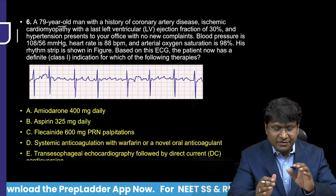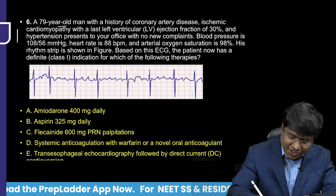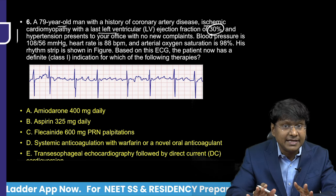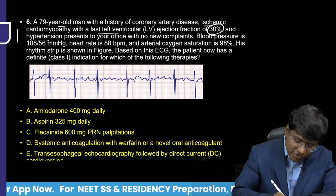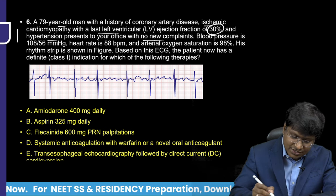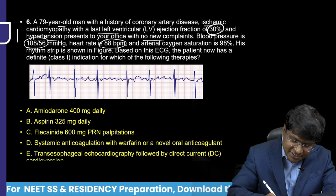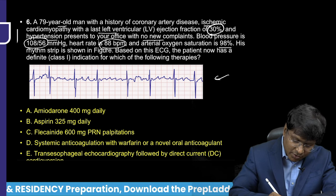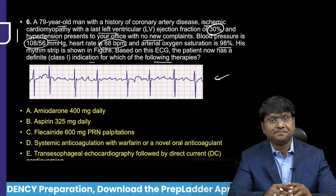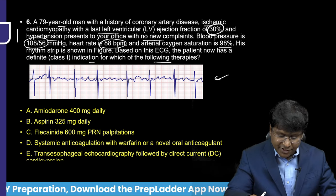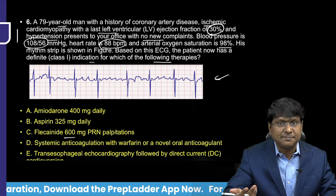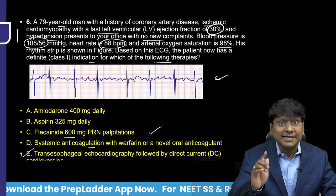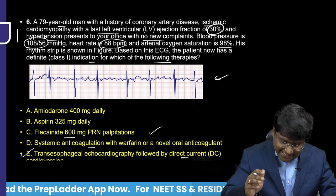Sixth question: A 79-year-old man with coronary artery disease, ischemic cardiomyopathy with left ventricular ejection fraction of 30%, and hypertension presents with no new complaints. Blood pressure is 108/56, heart rate 88 bpm, and oxygen saturation 98%. A rhythm strip is shown. Based on this ECG, what therapy does this patient now have a definite indication for? Options: amiodarone 400 mg daily; aspirin 325 mg daily; flecainide 600 mg PRN palpitations; systemic anticoagulation with warfarin or a novel oral anticoagulant; or transesophageal echocardiography followed by direct cardioversion.